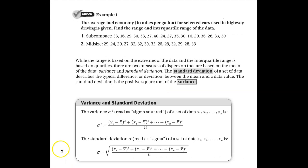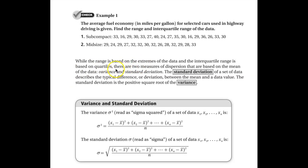We want to talk about two more measures of dispersion. So the range is based on the extremes of data, and the interquartile range is based on quartiles. And there are two measures of dispersion that are based on the mean, and they're called the variance and the standard deviation. And the standard deviation describes the typical difference between the mean and the data value. The standard deviation is the positive square root of the variance.